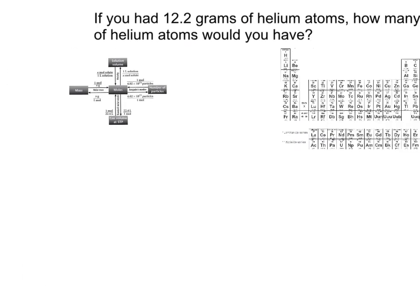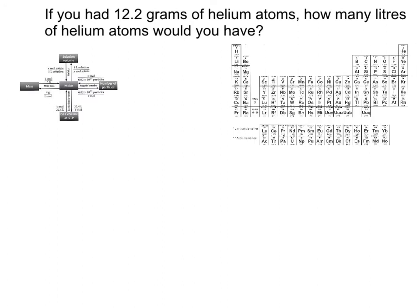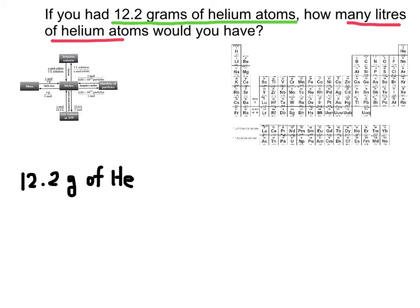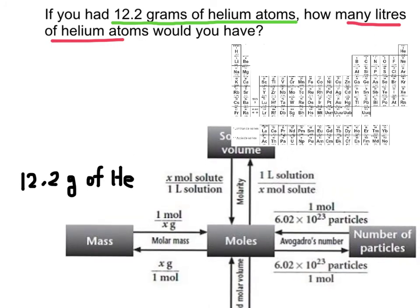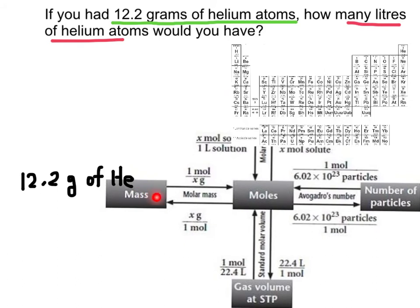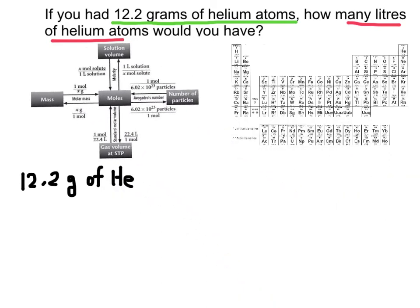Let us go ahead and try one more. If you had 22.2 grams of helium atoms, how many liters of helium atoms would you have? Let us start by writing the given — that is always going to be our first step. So we have 12.2 grams of helium. Then let us check our mole map to see what conversion factors we are going to use. We know that we have mass to start off, and we are moving across the mole — we have to pass through there, so that is our first conversion factor. Then we are going to go all the way down here to gas volume, and our next conversion factor is 22.4 liters per 1 mole. We are going to multiply by the first conversion factor.